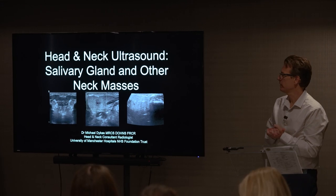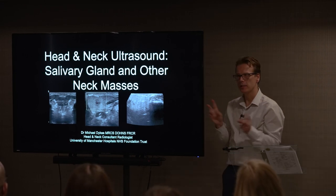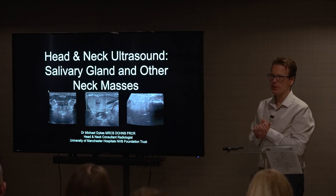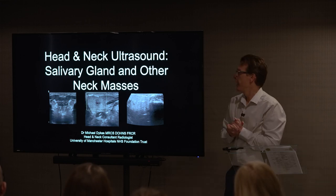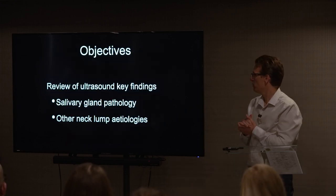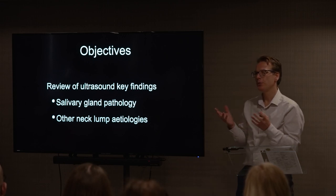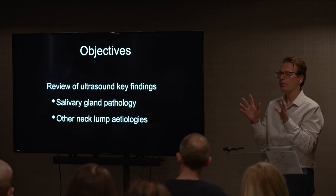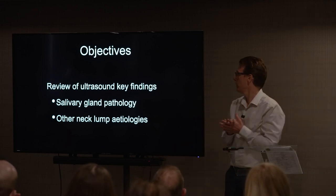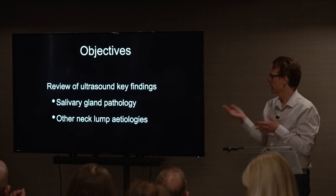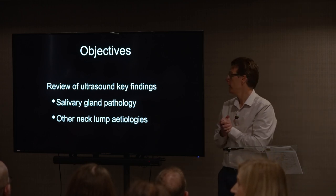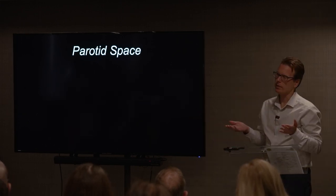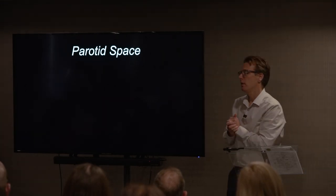I've got what I think is the best talk of the afternoon — the sexy stuff that's not thyroid or lymph nodes. These are the things you come across and go, 'Well, what is that?' The plan is to introduce you to what things look like when you put an ultrasound probe on them, the features to help you identify them. We'll start with salivary glands and then go on to other things in the neck that occasionally crop up. All the images here are from cases that have come through my list.